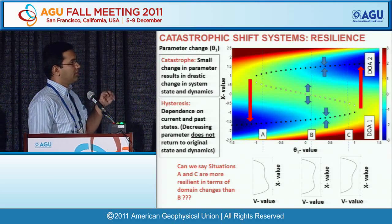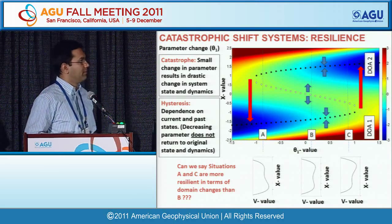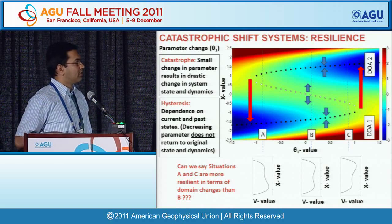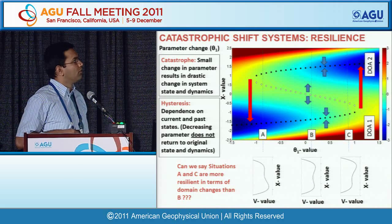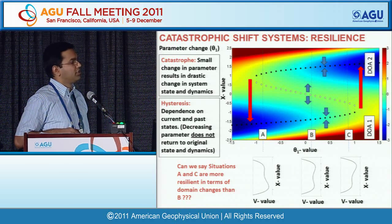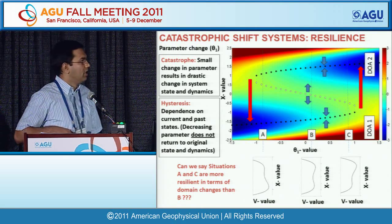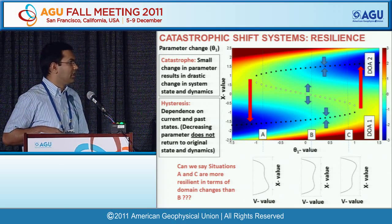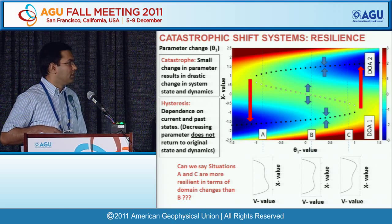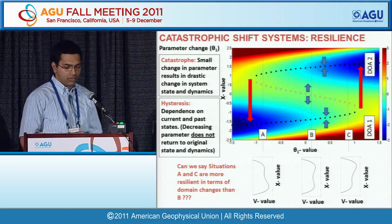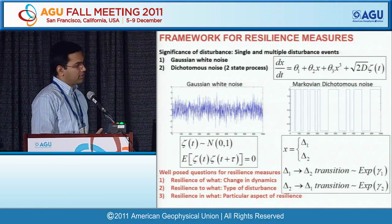The key question I'm trying to ask is: which system is more resilient or more vulnerable? Some points are more vulnerable to domain changes compared to others. If you are near the tipping point, you are more vulnerable to a domain change; farther away, you are less vulnerable. How do we go about quantifying this? I am developing some quantitative measures for that.